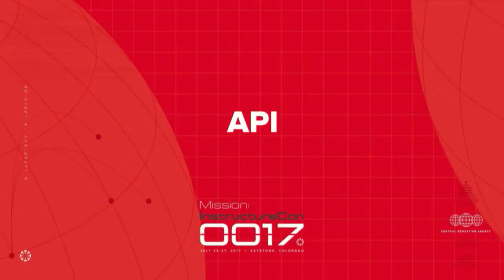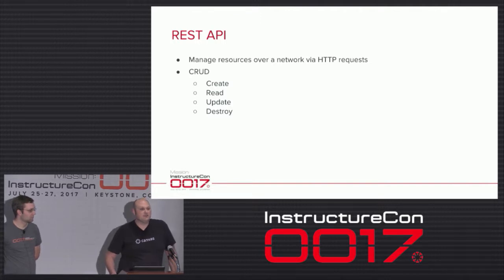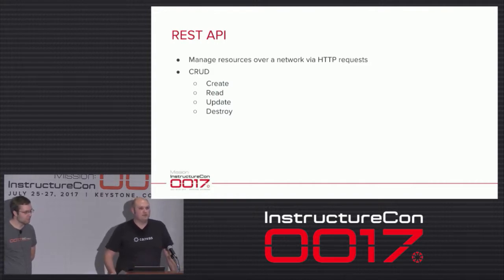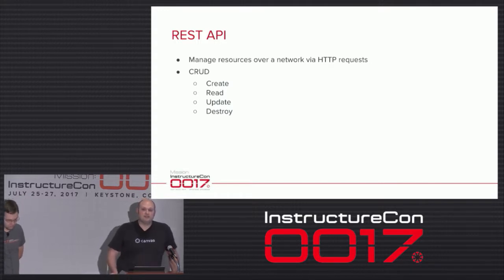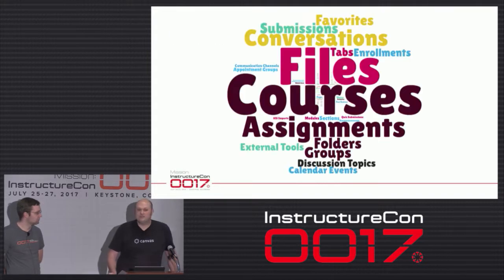Let's get into the first part of our platform, which is the API. Canvas exposes what's called a REST API or RESTful API. REST stands for Representational State Transfer. The gist of what you need to understand is this: a REST API allows you to manage resources over a network via HTTP requests using what we commonly refer to as CRUD operations — you can create new resources, read individual and collections of resources, update resources, and destroy or delete resources. The Canvas API exposes about 90 resources that you can manage.